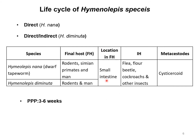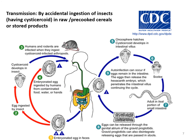The parasite is found in the small intestine of the final host. Intermediate hosts are different fleas, flour beetles, cockroaches, and other insects. The time required for completion of the life cycle is three to six weeks, with a minimum of three weeks. Eggs or gravid proglottids are released through the feces and can survive in the environment for around 10 days, contaminating food and water.